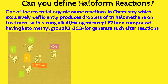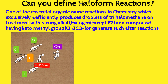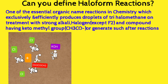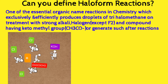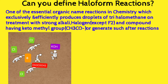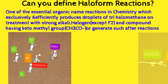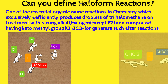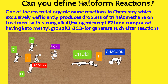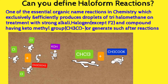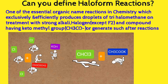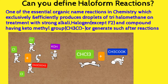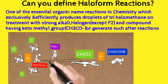An organic compound must possess a ketomethyl group, or one that may be converted into such a group. For example, acetone, having a ketomethyl group, easily reacts with three nascent chlorine atoms under the influence of a strong alkali — potassium hydroxide — and immediately produces droplets of chloroform.